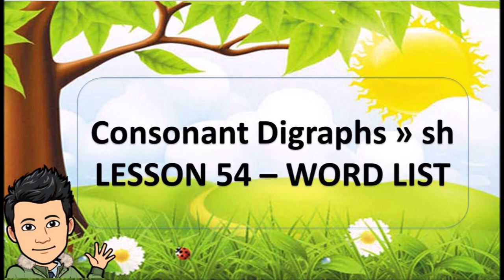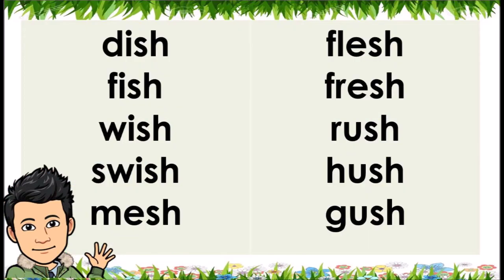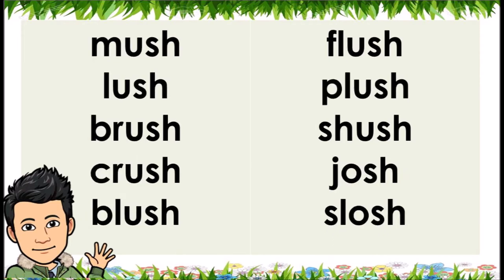Consonant Digraphs SH — Lesson 54. Word List: Dish, Fish, Wish, Swish, Mesh, Flesh, Fresh, Rush, Hush, Gush, Mush, Lush, Brush, Crush, Blush, Flush, Plush, Shush, Josh, Slosh.